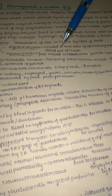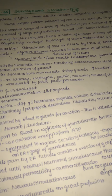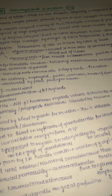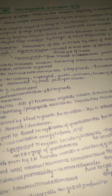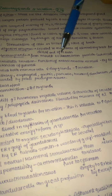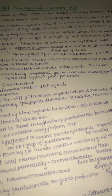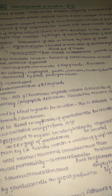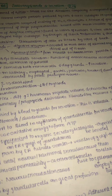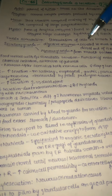Digestive enzymes are secreted in most areas of the alimentary tract starting from the mouth up to the distal end of the ileum. Mucus glands extend from the mouth to the anus and mainly provide lubrication and protection. Mucus is a gel-like substance covering the mucosal layer, protecting it from coarse food.